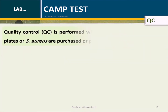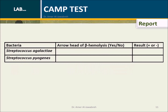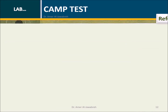QC is performed whenever a new lot of SBA plates or S. aureus are purchased or prepared. Listed below are ATCC bacteria and their corresponding expected results. Use the table shown for reporting results. References.